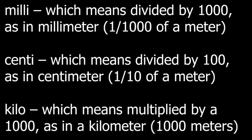Three words are used in conjunction to the basic units. Milli, which means divided by a thousand, as in millimeter. Centi, which means divided by a hundred, as in centimeter. And kilo, which means multiply by a thousand, as in kilometer.